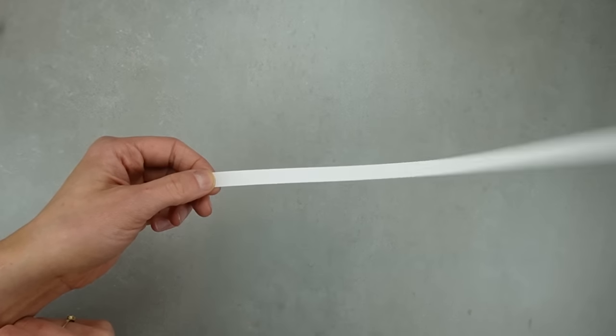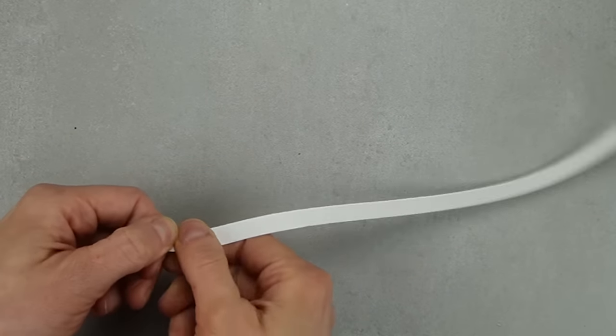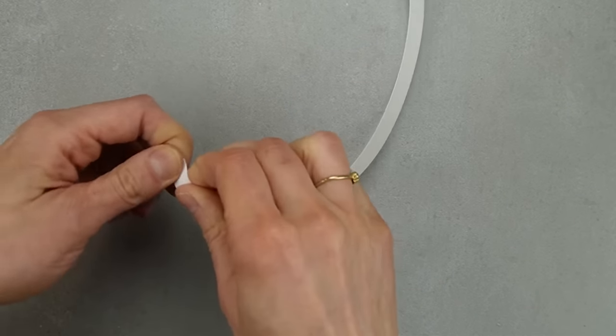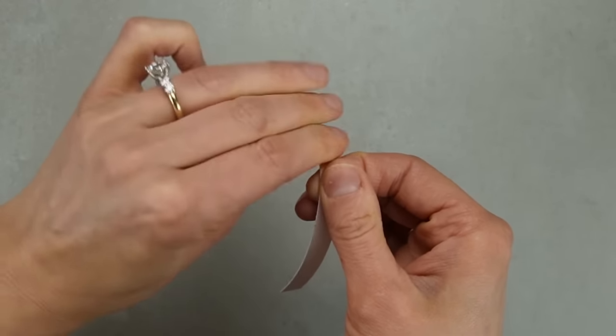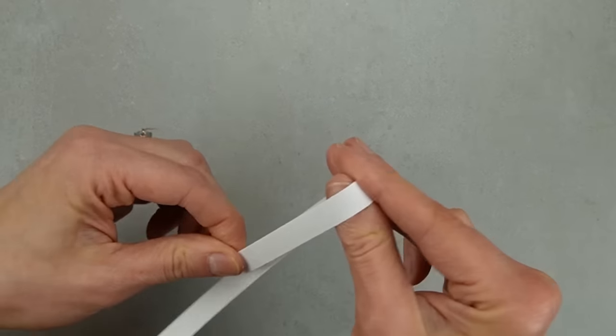For 1:12 scale mugs, I cut a piece of thick paper at 3/8 of an inch wide. To make the paper more agreeable to accepting a curve, I'm running my finger along it. I'm not entirely sure why this works, but it's a suggestion I received during my tea kettle video.